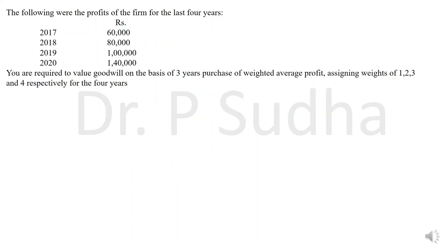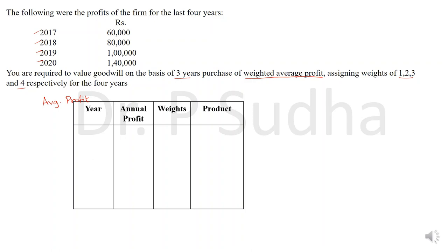This is the last question. The profits of the firm for the last 4 years are given and we are required to calculate goodwill on the basis of 3 years' purchase of weighted average profit, assigning weights 1, 2, 3, and 4 respectively for the 4 years. We need to calculate weighted average, not simple average, so we set up a table with columns for year, annual profit, weight, and product.